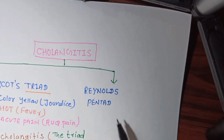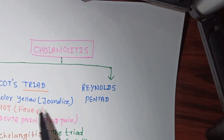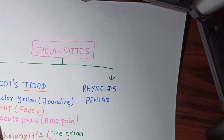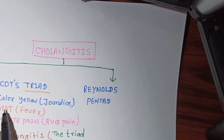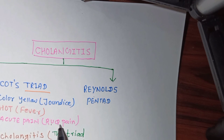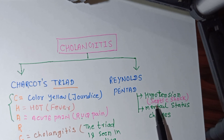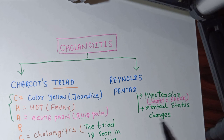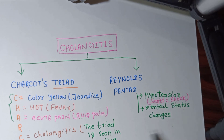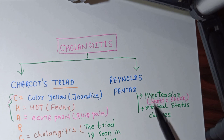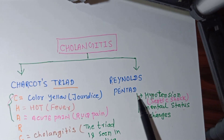In Reynolds' pentad, there are the same three clinical features as Charcot's triad, plus two additional symptoms: hypotension and mental status changes — which together represent septic shock. So the three features of the triad plus these two additional features make up Reynolds' pentad. This is all about the clinical presentation of cholangitis.